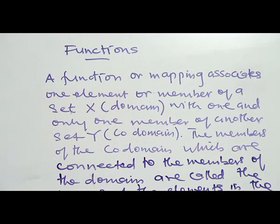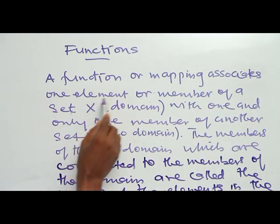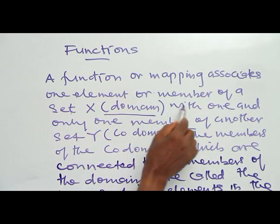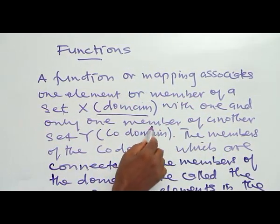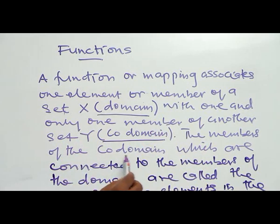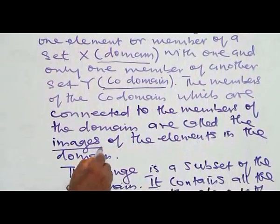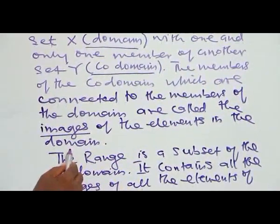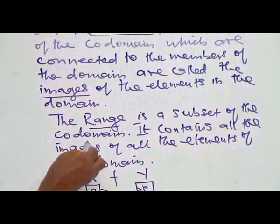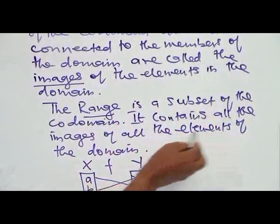A function or mapping associates one element or member of a set S, which we call the domain, with one and only one member or element of another set Y, which is called the co-domain. The members of the co-domain which are connected to the members of the domain are called the images of the elements in the domain. The range is a subset of the co-domain; it contains all the images of all the elements of the domain.